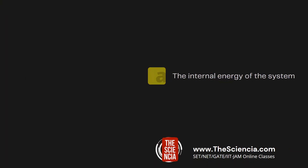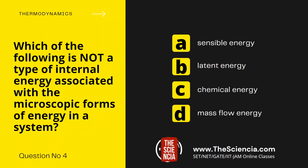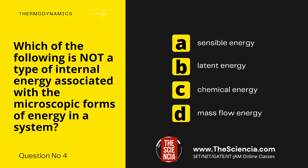Now let us move to question number 4. Which of the following is not a type of internal energy associated with the microscopic forms of energy in a system? Option A, sensible energy. Option B, latent energy. Option C, chemical energy. And Option D, mass flow energy.